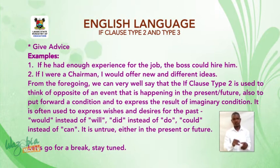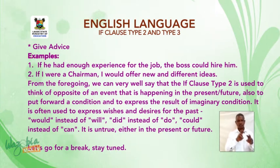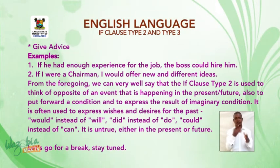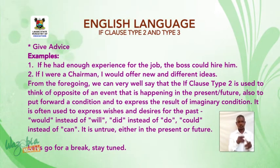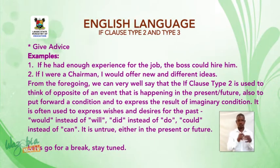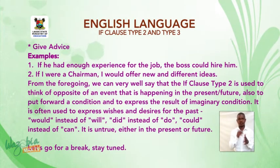From the foregoing, we can very well say that if clause type 2 is used to think of the opposite of an event happening in the present or future, also to put forward a condition and to express the result of an imaginary condition. It is often used to express wishes and desires — would instead of will, did instead of do, could instead of can. It is untrue, either in the present or future.